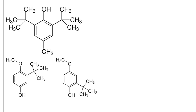These synthetic preservatives — BHT and two varieties of BHA — create stable radicals in a similar way to hydroquinone. That's why they act as preservatives in food; they fight the production of free radicals.